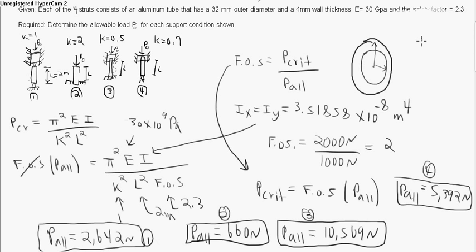That means anytime something buckles, if you have a column like that, if it buckled, it would go like this. You can take a ruler and push on both ends and you will see that it does in fact buckle. Notice the one with the free end, that was the one that for it to be in safe conditions, you can only allow 660 newtons on that thing for a safety factor of 2.3.